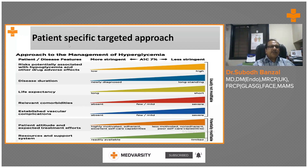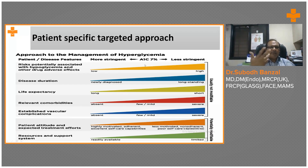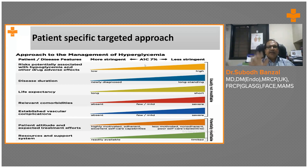Those who have risk of potentially associated hypoglycemia and other drug adverse effects — you keep the A1C on the higher side because they may develop more hypoglycemic episodes and have problems. Those who have fatigue disorder, chronic renal failure, those who are lean and thin, those who are elderly — you keep the A1C around 7 or 7-plus. But if they are normal, young, and having no risk of hypoglycemia, keep A1C below 6.5, 7, or 6.